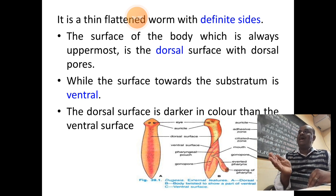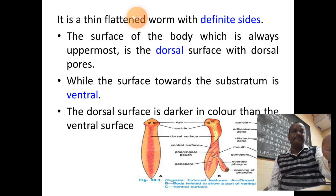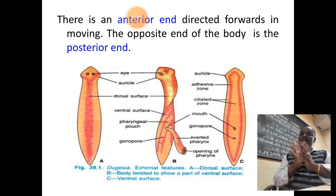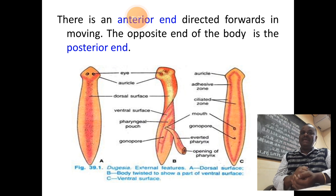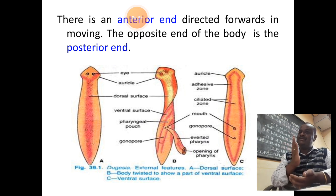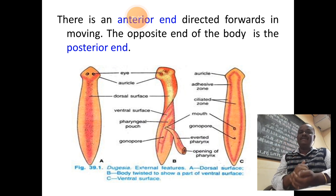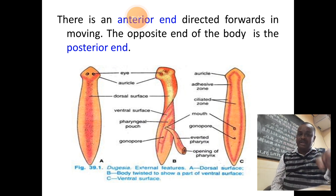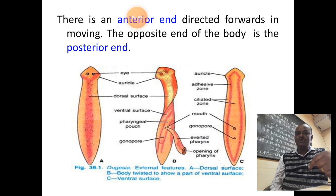The dorsal surface tends to have a darker color and the ventral surface a lighter color comparatively. The anterior end refers to the end where the head of the animal is present and shows the direction of movement. The opposite end is called the posterior end — the head indicating anterior and the tail indicating posterior.